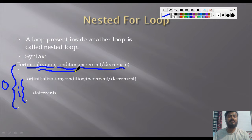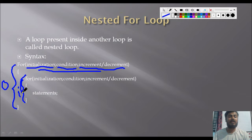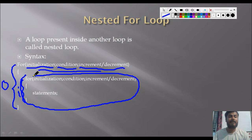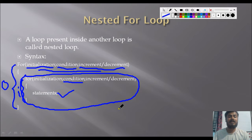If the outer loop's condition is true, then the inner loop statement gets executed. This is the inner loop, and till the inner loop's condition is true, this statement gets executed. If the condition becomes false, then it comes out of the inner loop and goes back to check the outer loop condition again. If that condition is true, it enters the inner loop again.